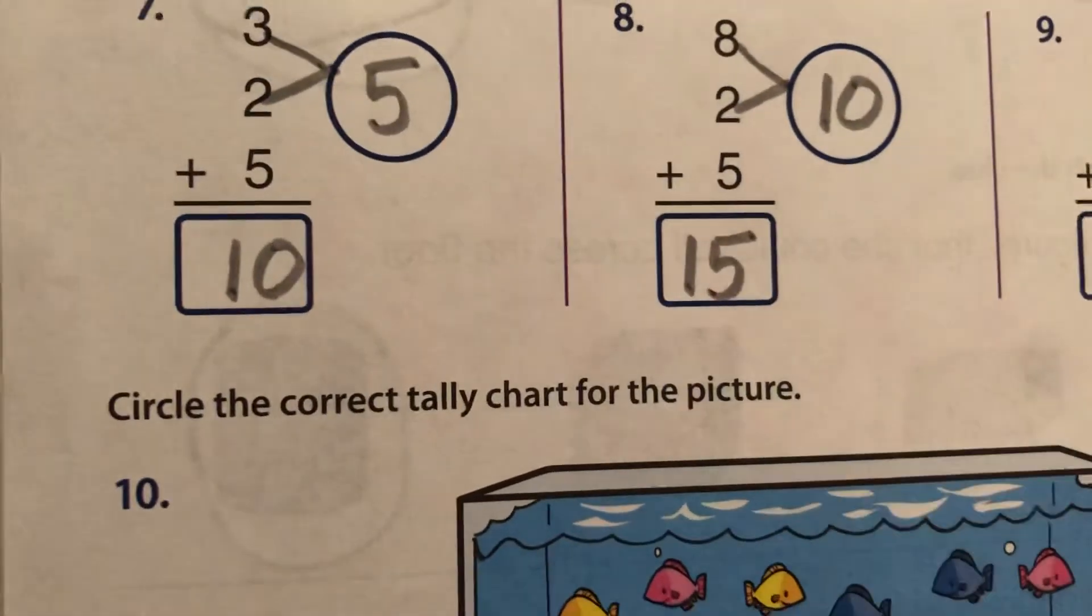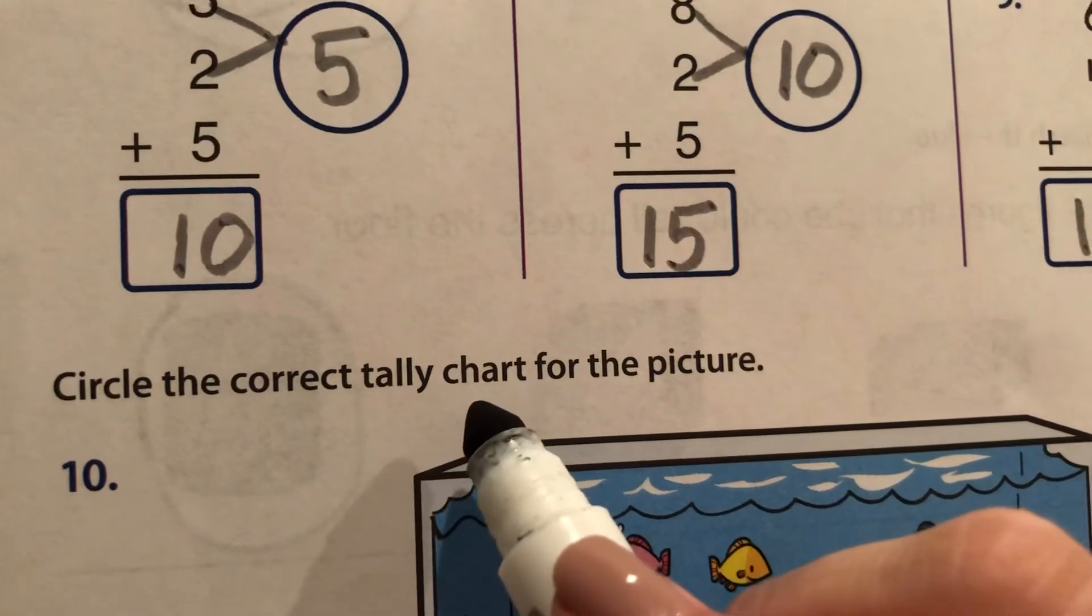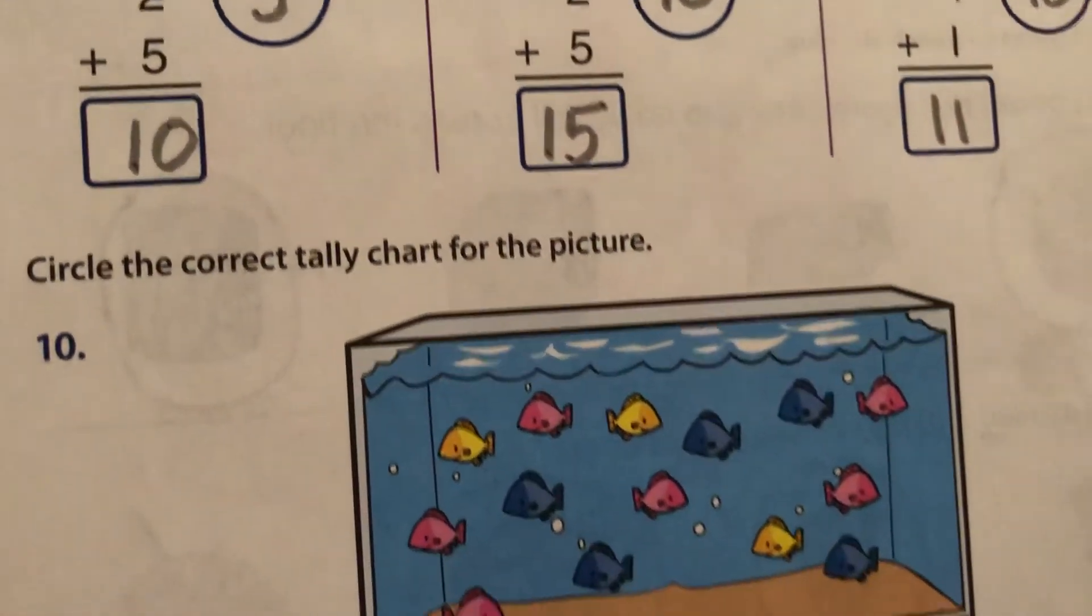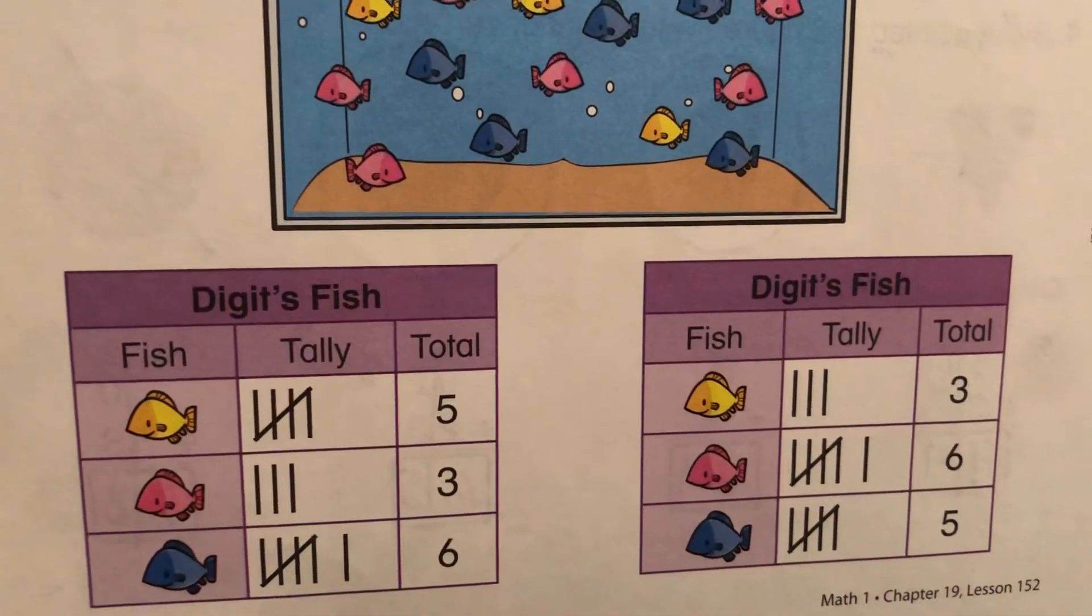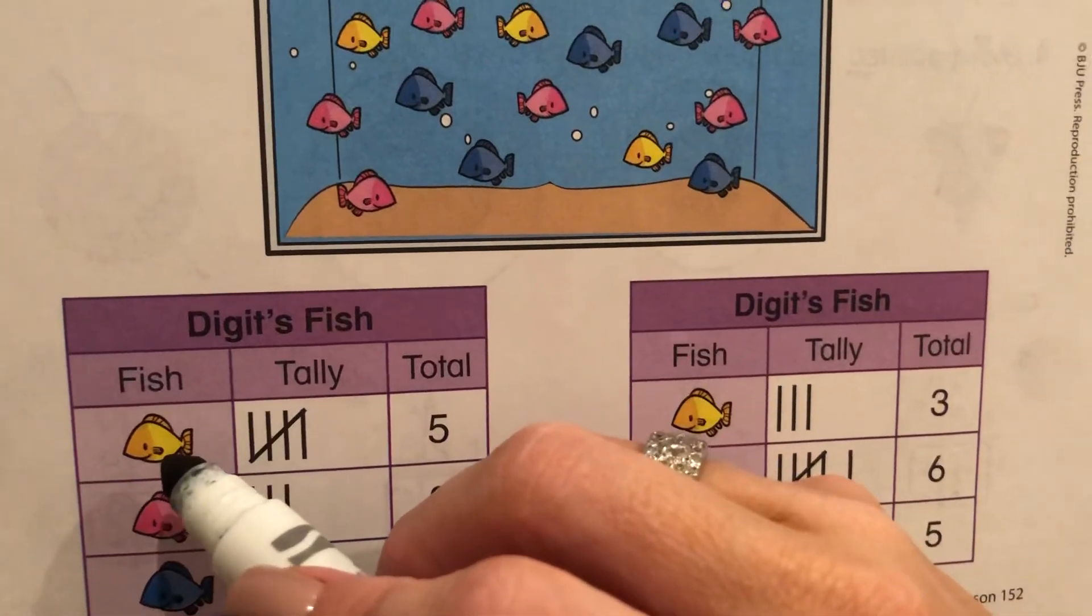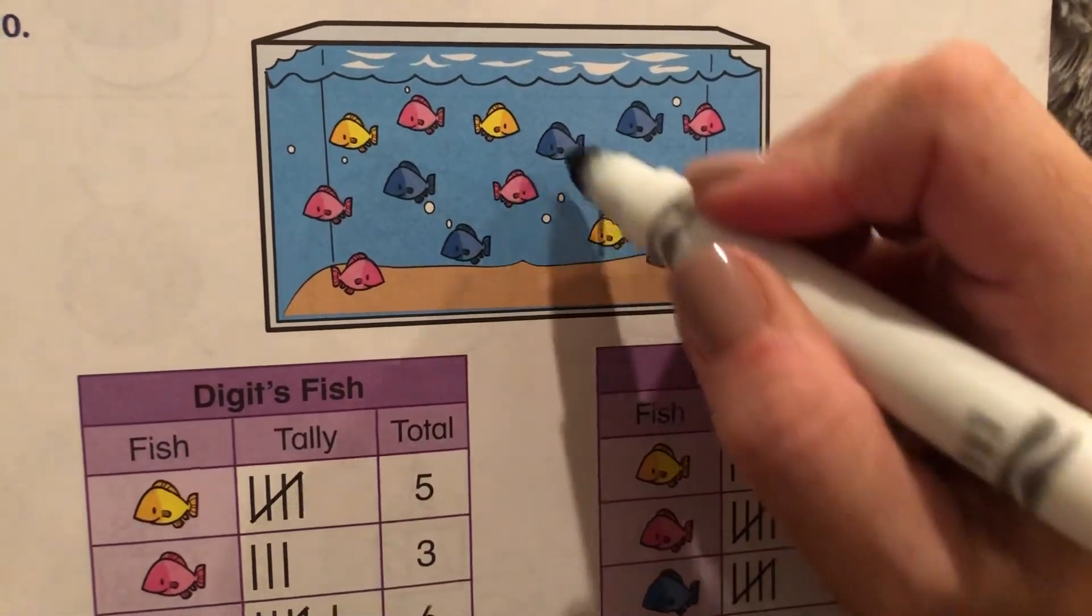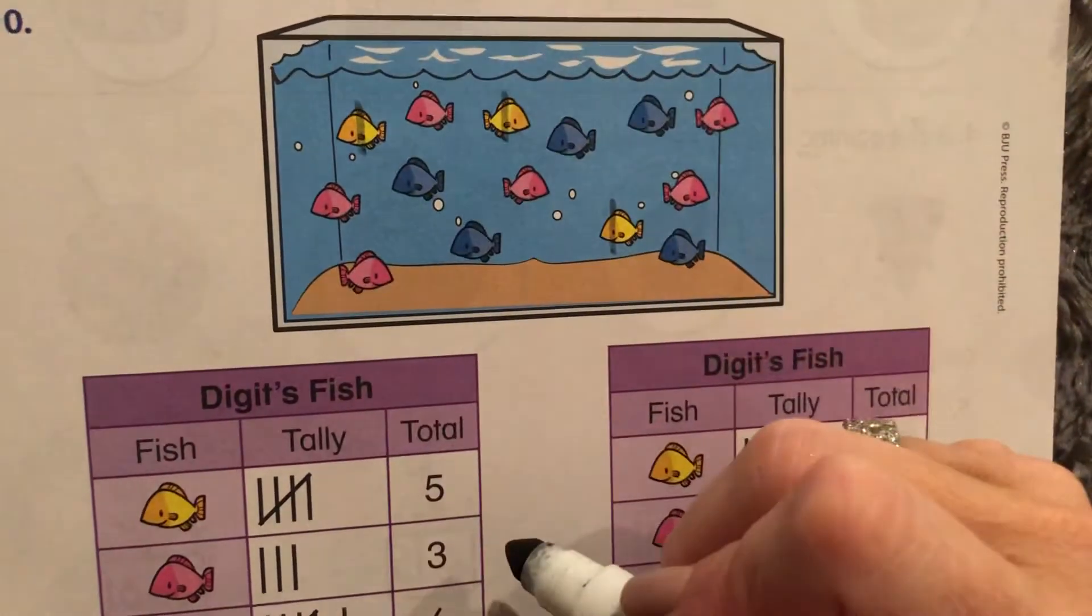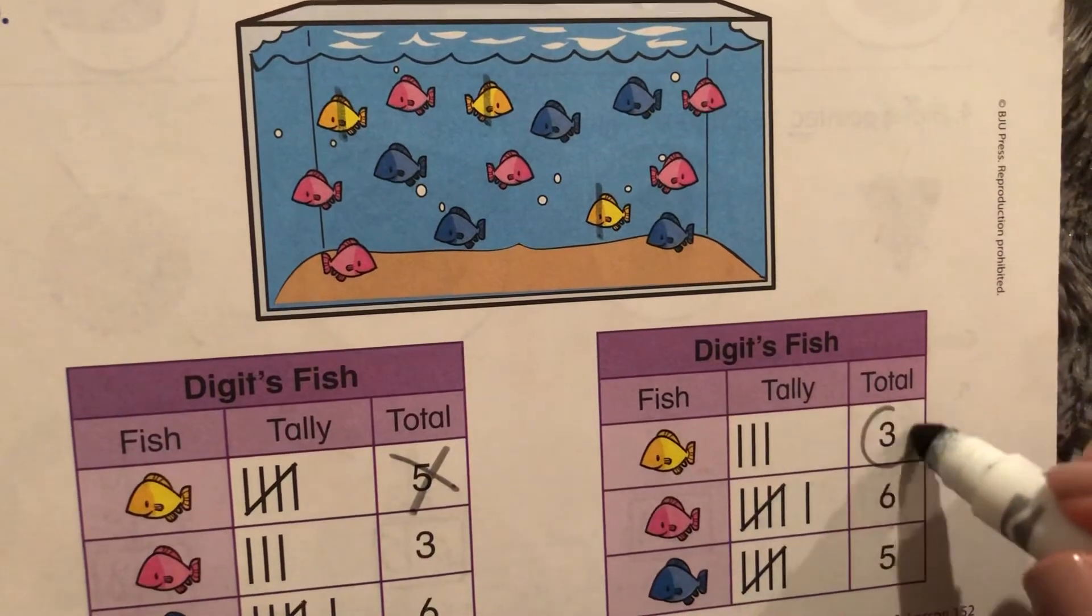Let's see what this says. Circle the correct tally chart for the picture. Well, let's see. It says Digit's Fish. This one says five yellow. Let's see. One, two, three. That can't be right. Three yellow is correct.